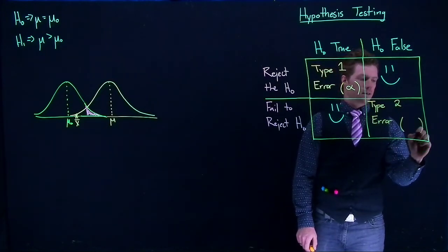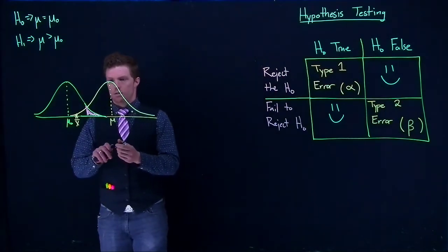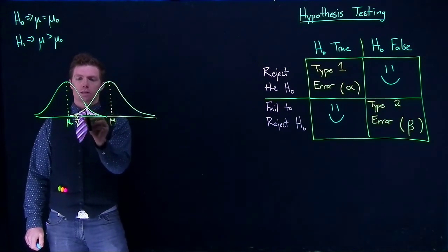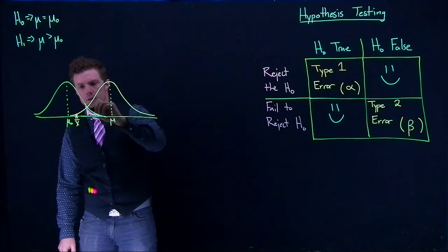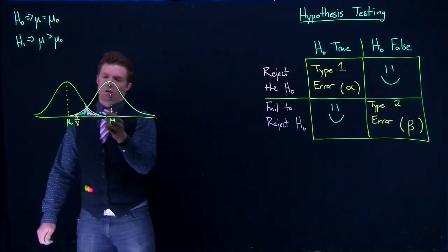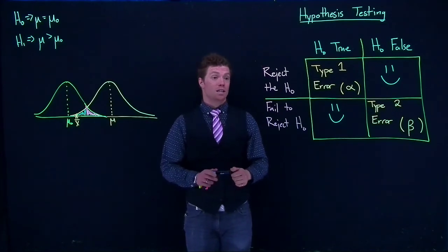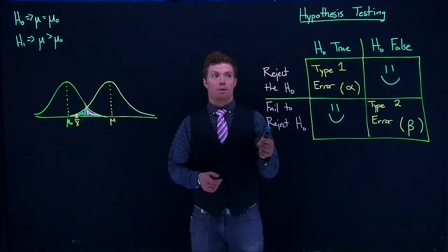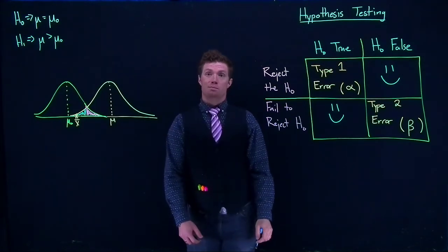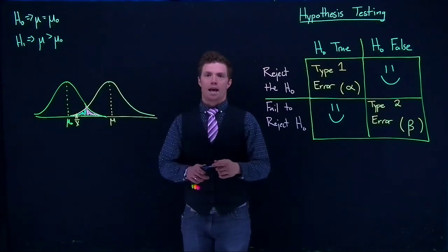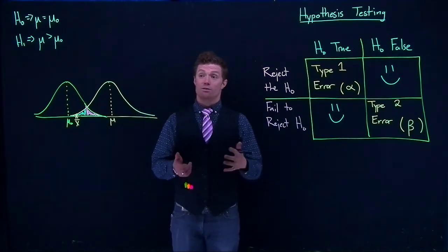We call this beta. To calculate beta: from where the rejection region starts — that alpha boundary — on the true distribution, beta is the area under the curve on the true distribution that falls below that critical value. So beta is the probability that we are going to fail to reject the null hypothesis when the null hypothesis is actually false. We want beta to be as small as possible, just like we wanted alpha to be as small as possible.